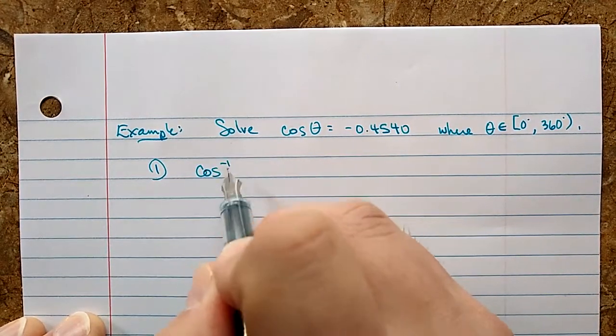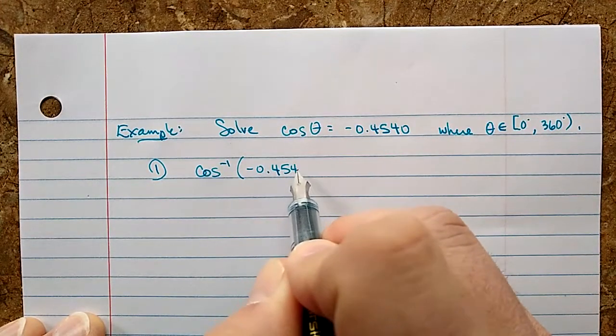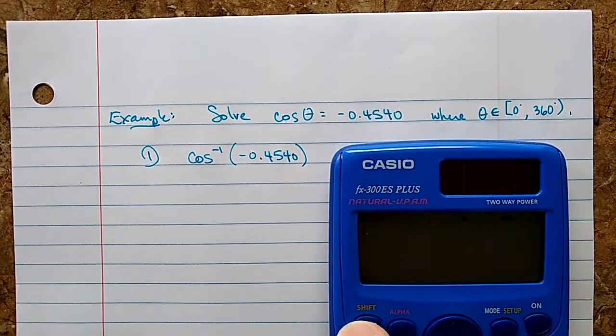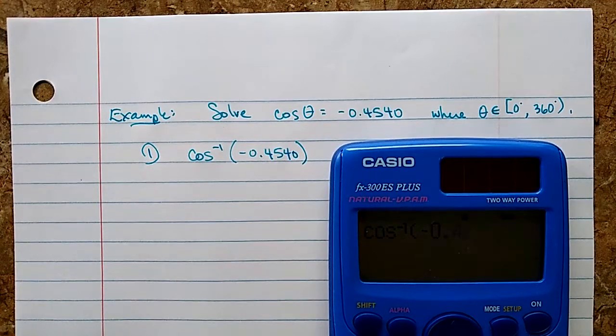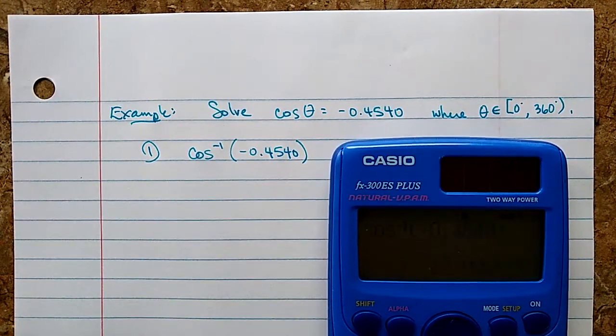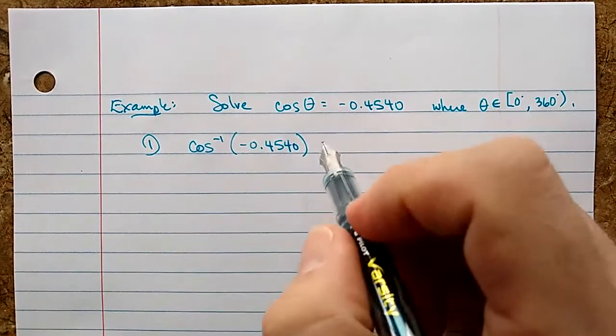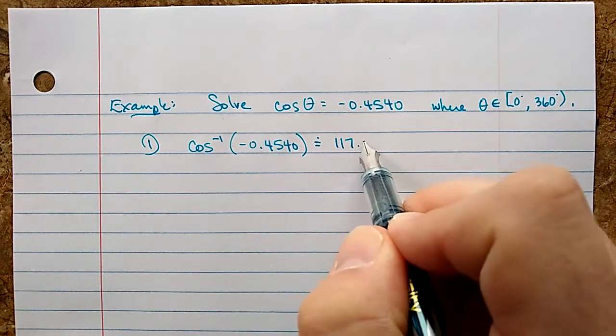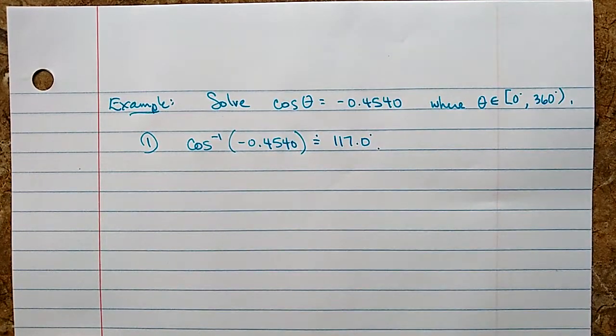Once again, cosine inverse of this number. Notice I'm not saying theta equals, because I have to see what my calculator gives me first. Cos inverse of negative 0.4540 gives 117.0 degrees.